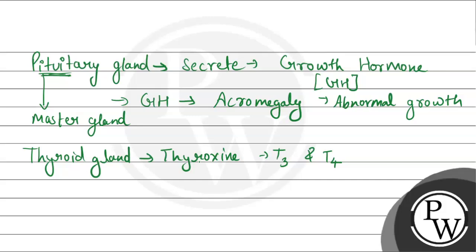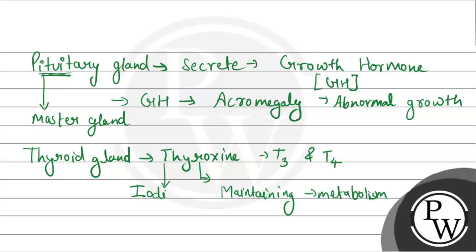Thyroxine hormone works to help maintain and control the metabolism of the body — including carbohydrate metabolism, fat metabolism, and protein metabolism. To produce thyroxine hormone, the body needs a mineral known as iodine. If the body does not get enough iodine, thyroxine hormone is not produced.